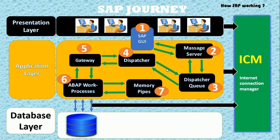If the dispatcher is free, the dispatcher queue sends the request to the dispatcher. After the dispatcher, the request uses the gateway and reaches the ABAP work process. Through the ABAP work process, it uses memory and fetches data from the database layer. All three layers use the ICM — the Internet Connection Manager — and in this way the SAP request moves to the SAP user.